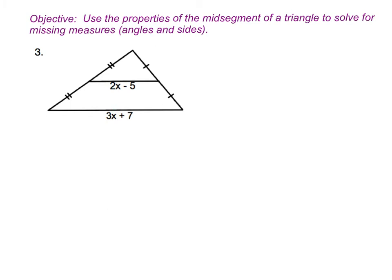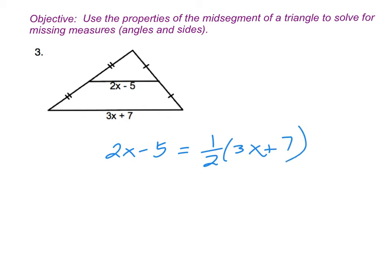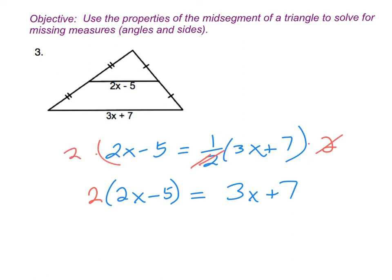Still two options for your equations. We could write: 2x minus 5 is equal to one half of 3x plus 7 — mid-segment is half the third side. Or you could write 2 times the quantity 2x minus 5 is equal to 3x plus 7. That's just the opposite — I literally took the first one and multiplied both sides by 2.